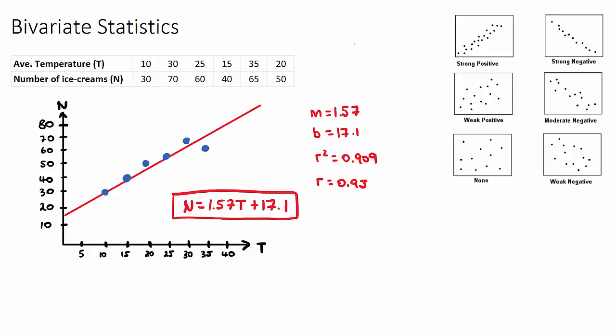This is very important because then if I say how many ice creams will we sell N if the temperature was 17 degrees like I said earlier, well even though we've had no day before where the average temperature was 17, we can just sub 17 into this value for T and it will find the corresponding N value, the number of ice creams.